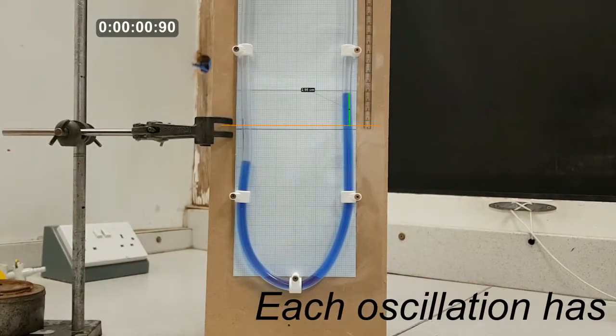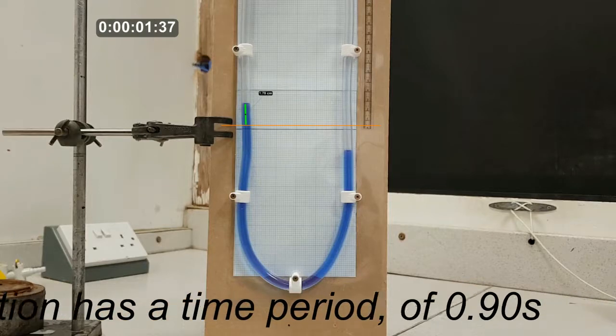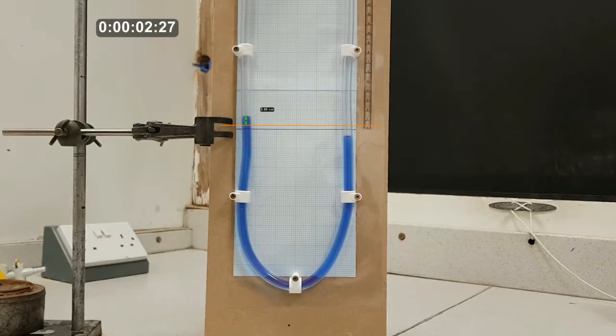Watching again in slow motion, we can see that each oscillation has the same time period but its amplitude decays very quickly.